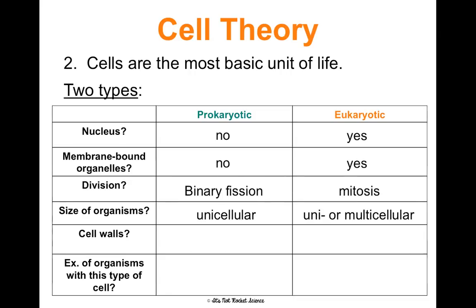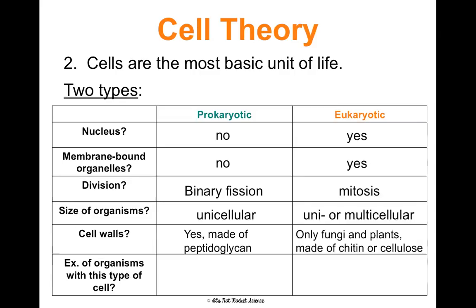Plants, fungus, and animals are all multicellular eukaryotic organisms. Prokaryotic cells do have cell walls made of peptidoglycan. Eukaryotic cells can have cell walls — fungus and plants do, but animal cells do not, so we don't say all eukaryotic cells have cell walls. An example of a prokaryotic organism is bacteria. Examples of eukaryotic organisms are animals, plants, fungus, and protists — and that includes humans.